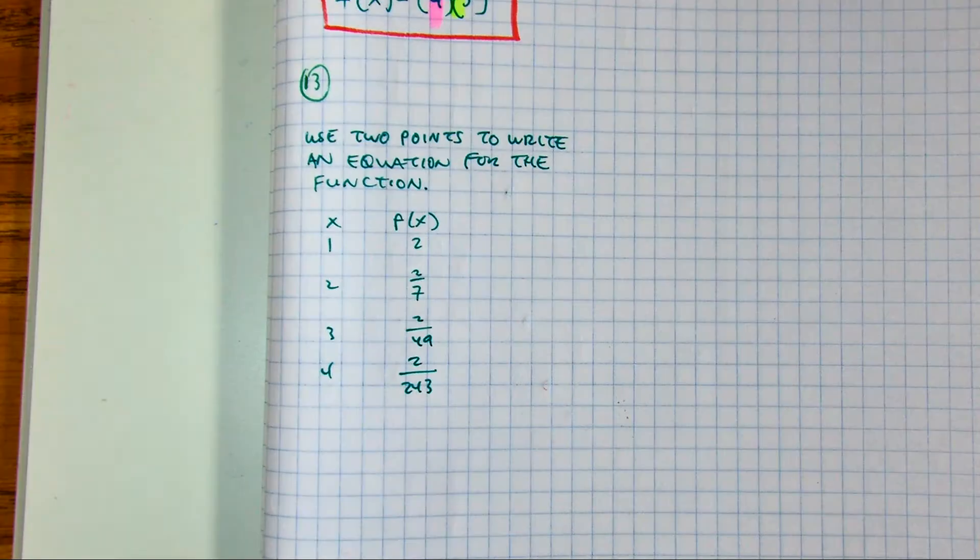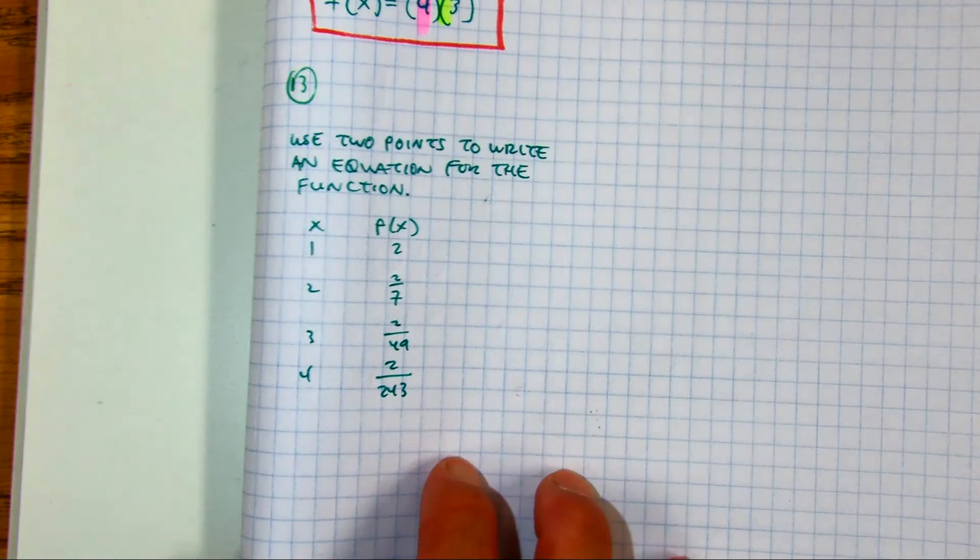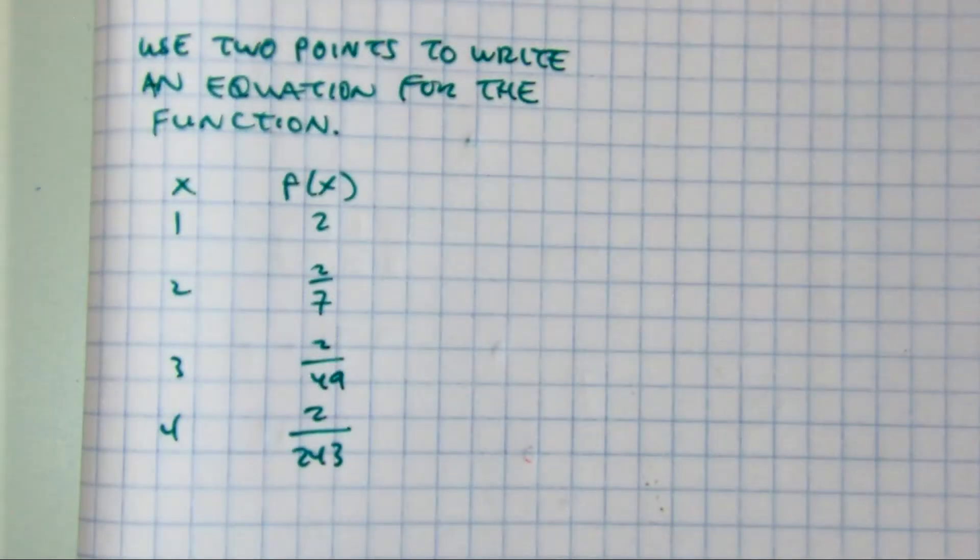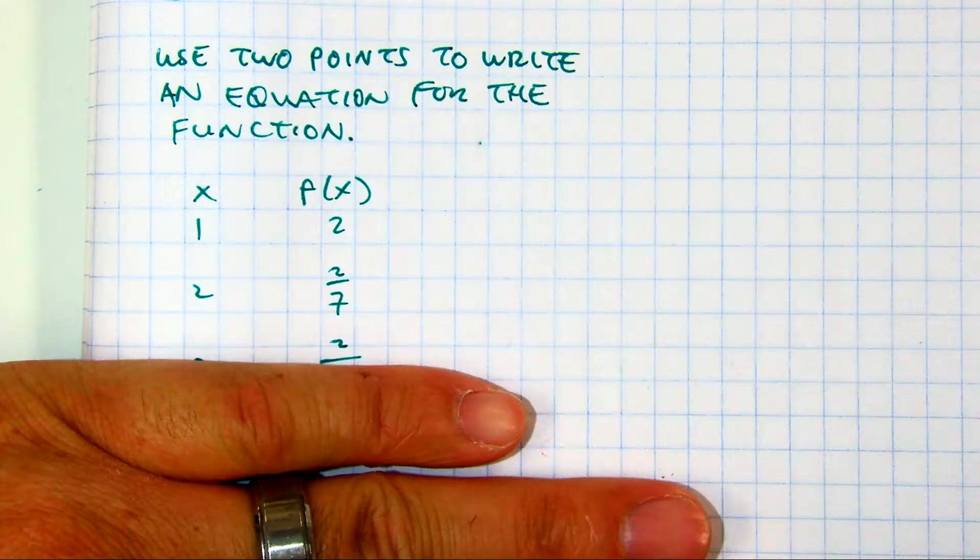Alright, in this problem, it's a little bit different. Even though they gave us a table of values, they're asking us to only use how many points? Two points. So eventually they're going to take away the other points. Okay, so let's pretend the rest of the table is not here.